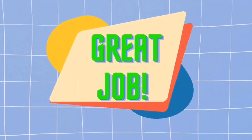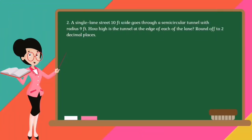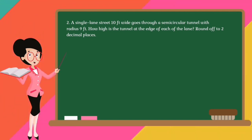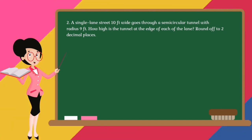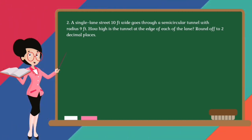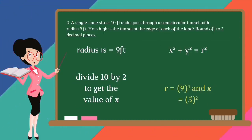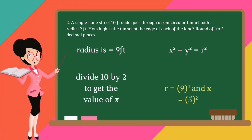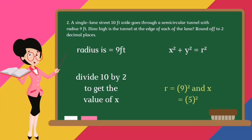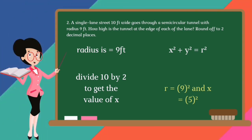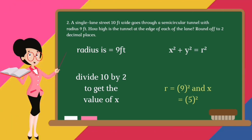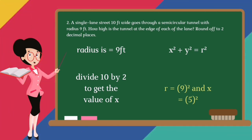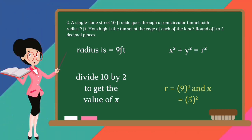Now let us move on to problem number 2. A single-lane street 10 feet wide goes through a semicircular tunnel with a radius of 9 feet. How high is the tunnel at the edge of each lane? Round off to two decimal places. The radius is equal to 9 feet, and let us say our center is at (0, 0). So the equation for the tunnel is x² + y² = r², where r² = 9². Then let us divide 10 by 2 to get the value of x, so x = 5.